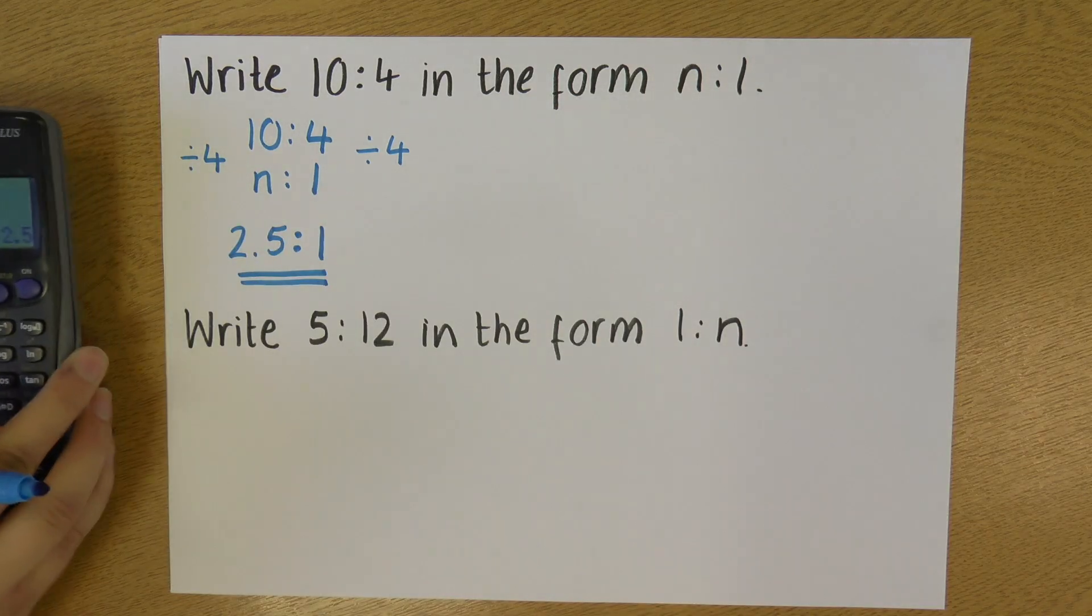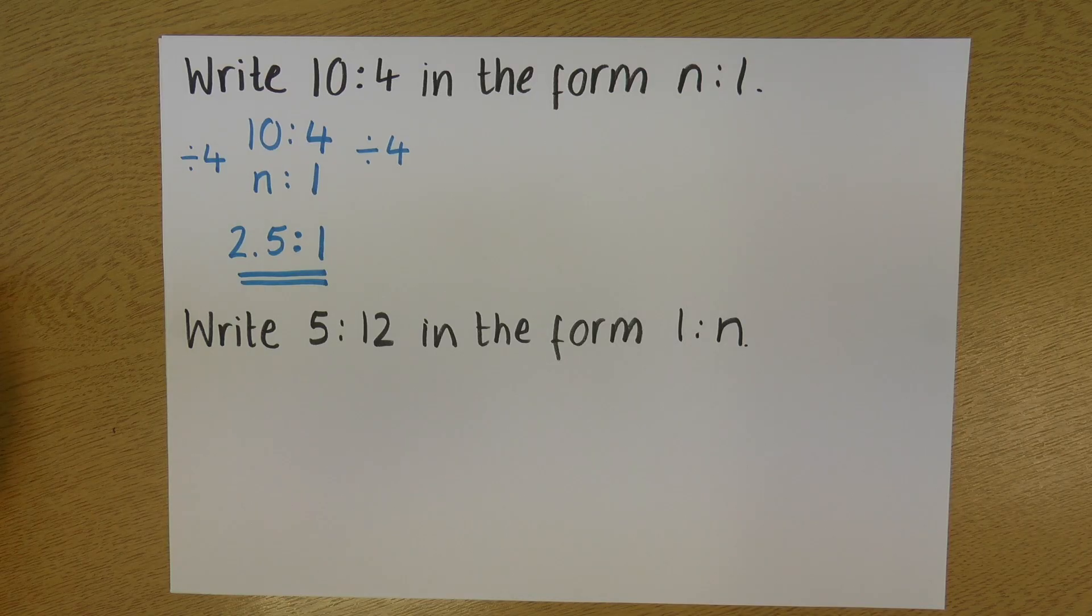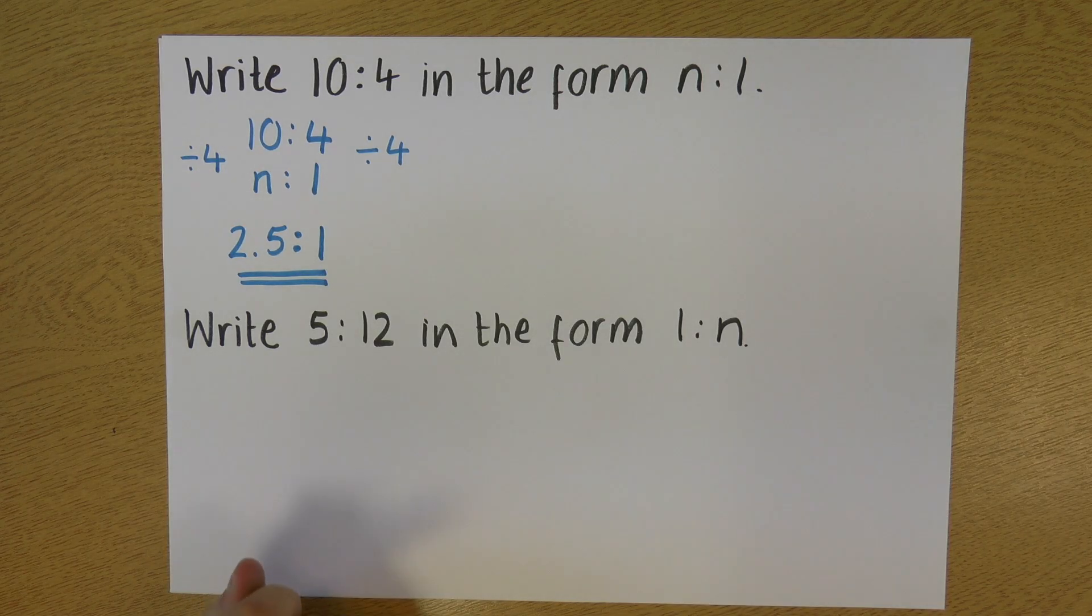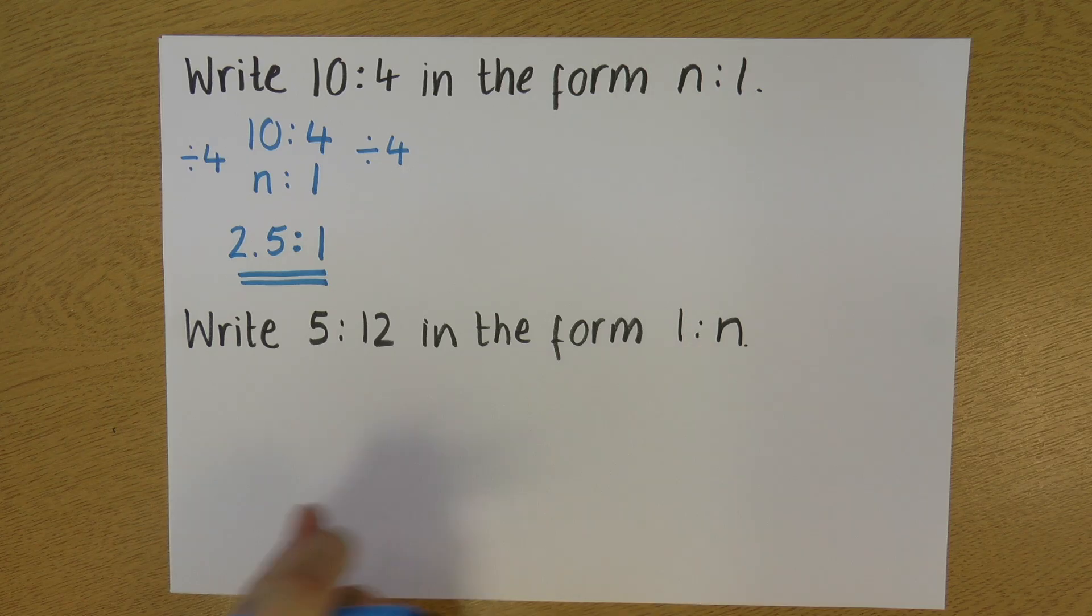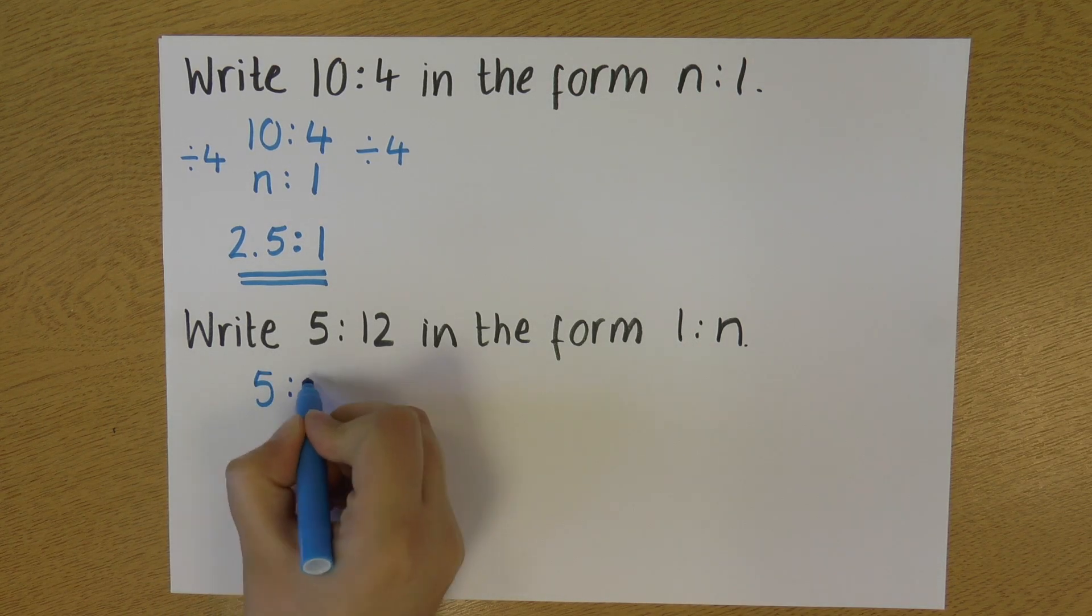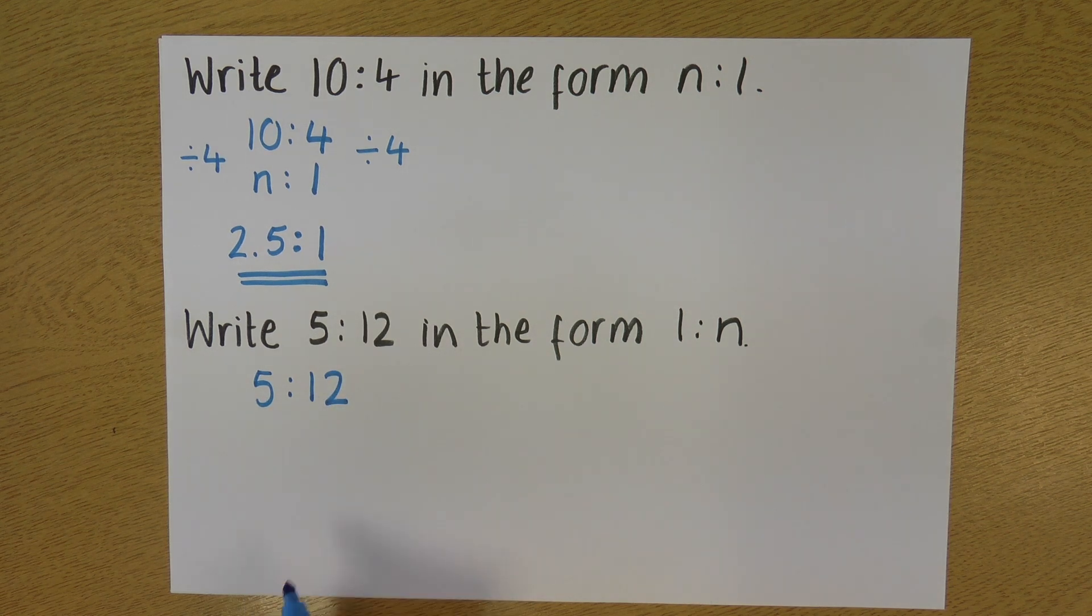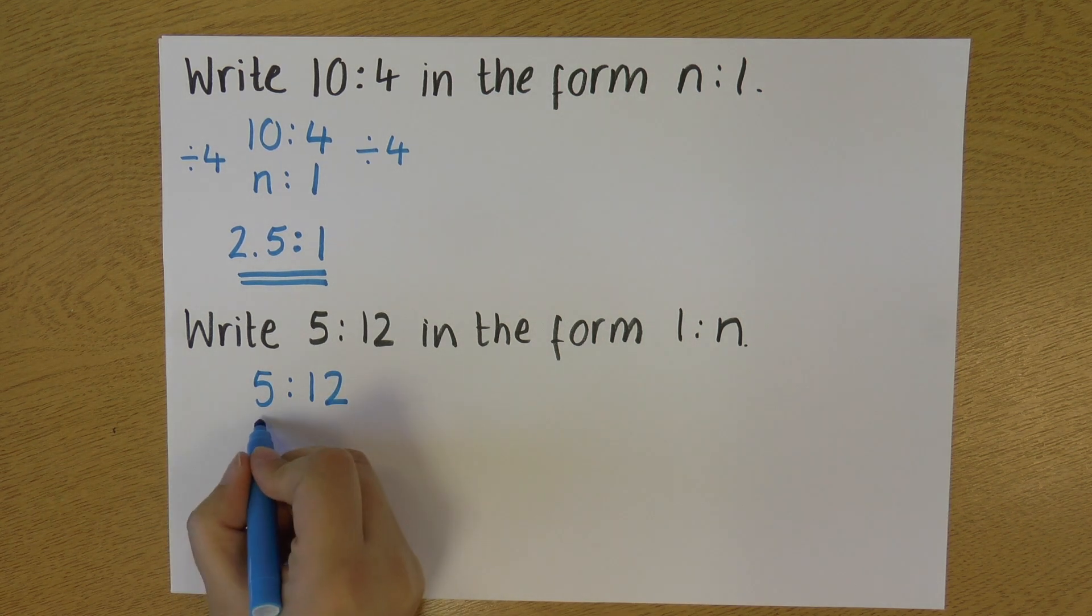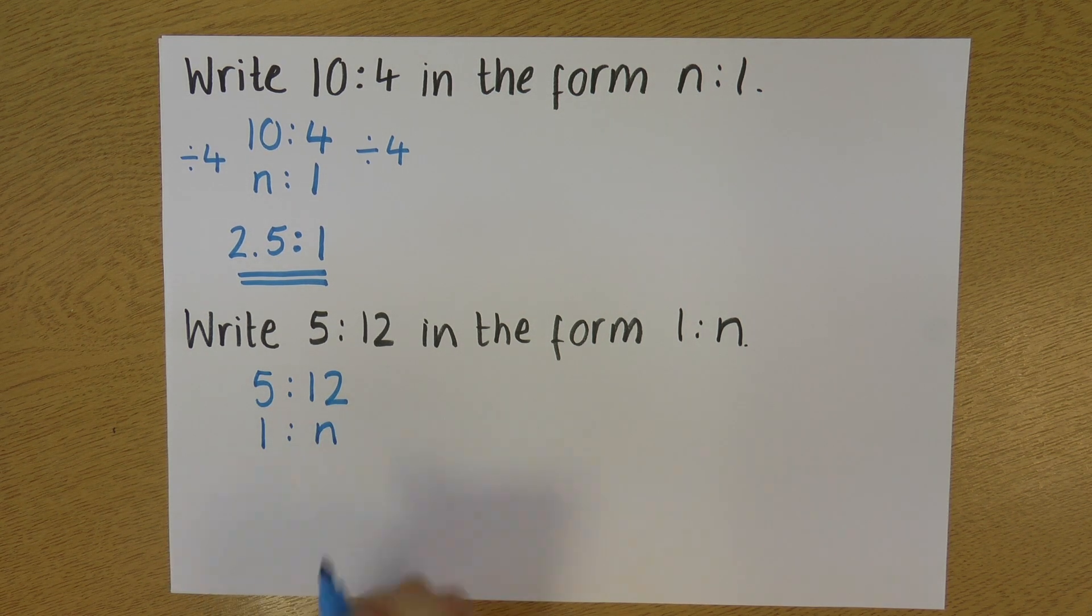Let's have a look at this second question, where I'm being asked to write 5 to 12 in the form 1 to n. I'm going to do the same thing to start off with. I'm going to write 5 to 12 with my 1 to n underneath it.